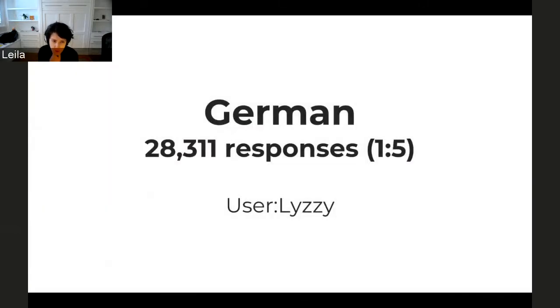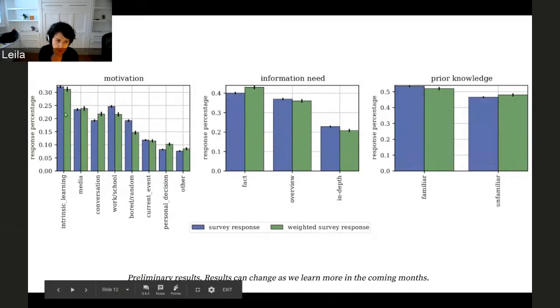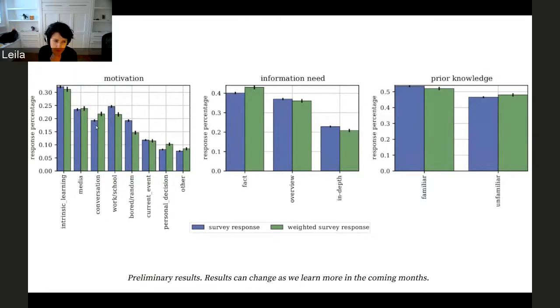Okay, let's now look at German. We had 28,000 responses for German Wikipedia. And here is what you see. Intrinsic learning again is reported as the top reason for coming to German Wikipedia, followed by media, followed by conversation. The slope is much smoother here. You don't have a significant drop. There is one thing you see in German is that fact checking is higher. So basically the distribution is not as spread as, let's say, Arabic or even English. For German, you have a lot of fact checkers, and in-depth reading is as much as we saw for English Wikipedia in 2016. Prior knowledge seems to be pretty split, also for German, 50-50.